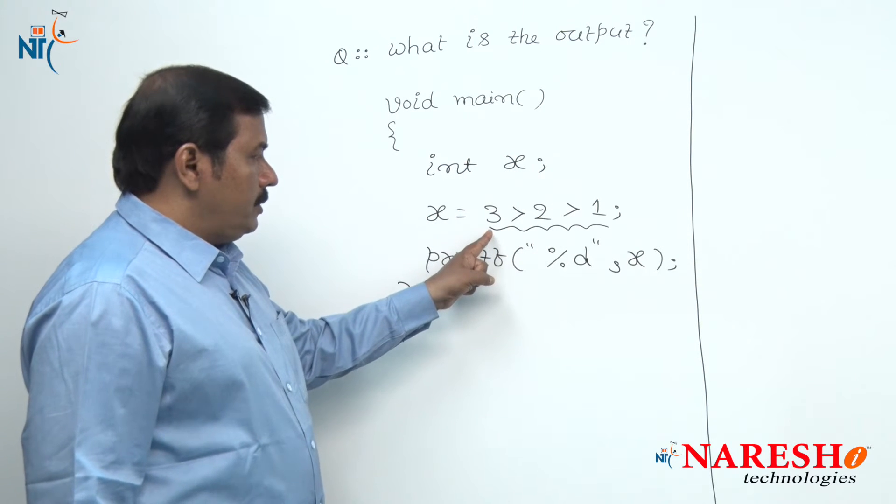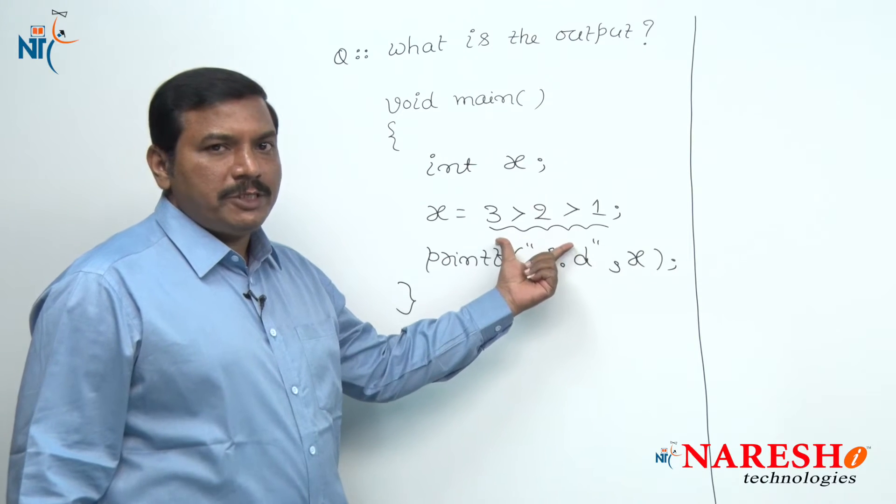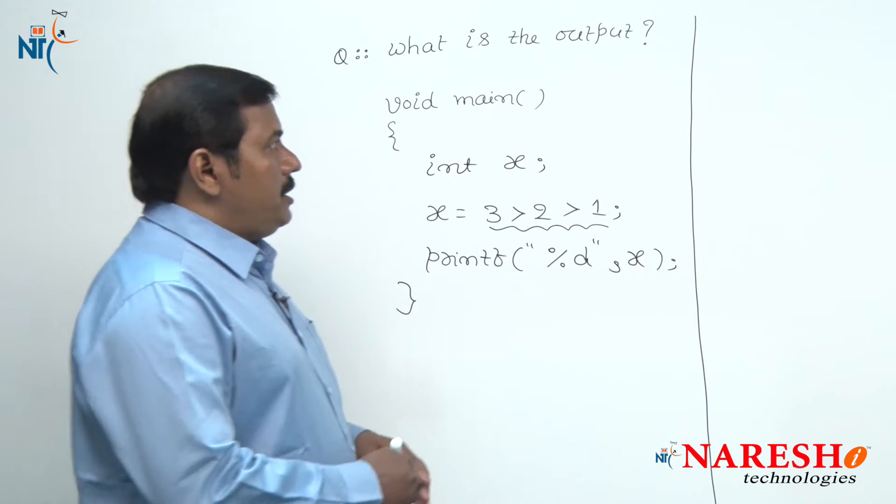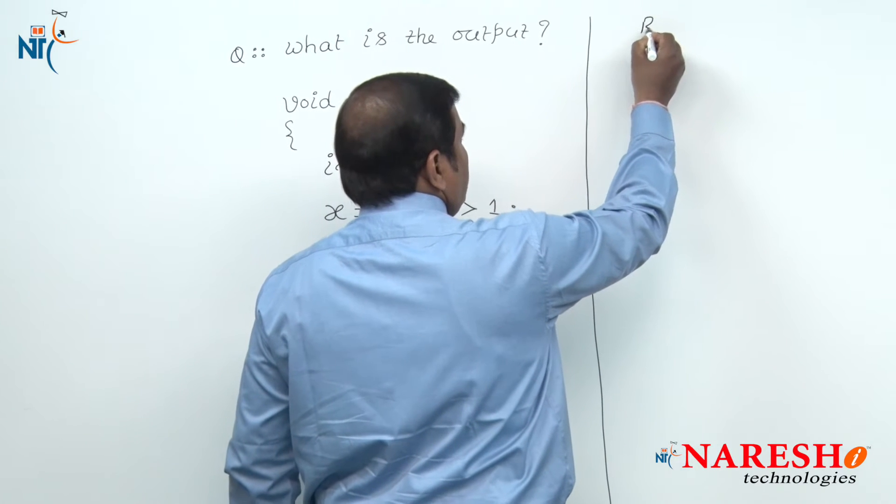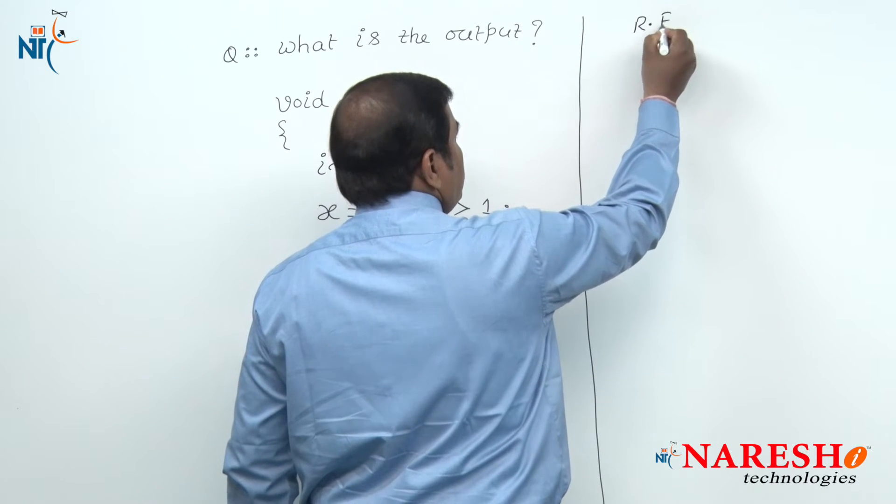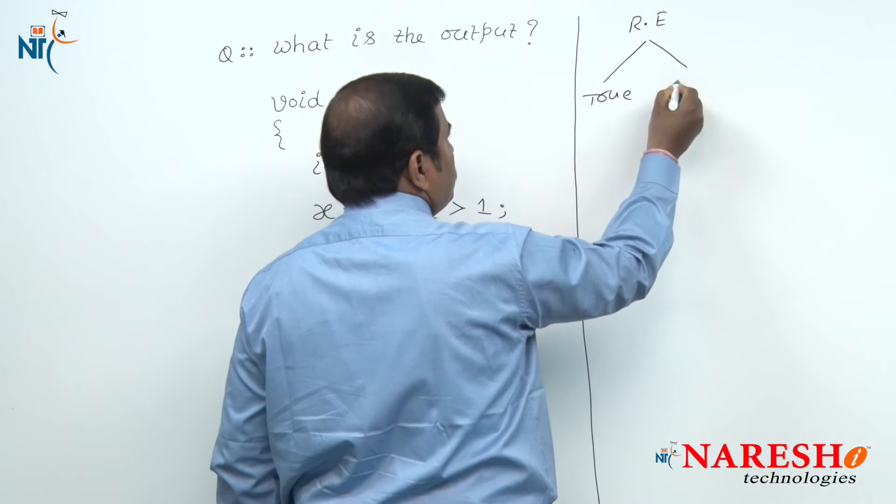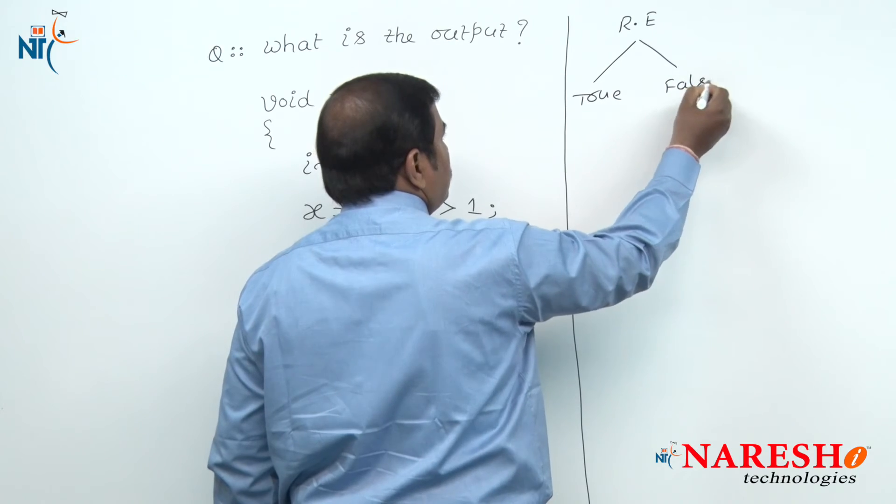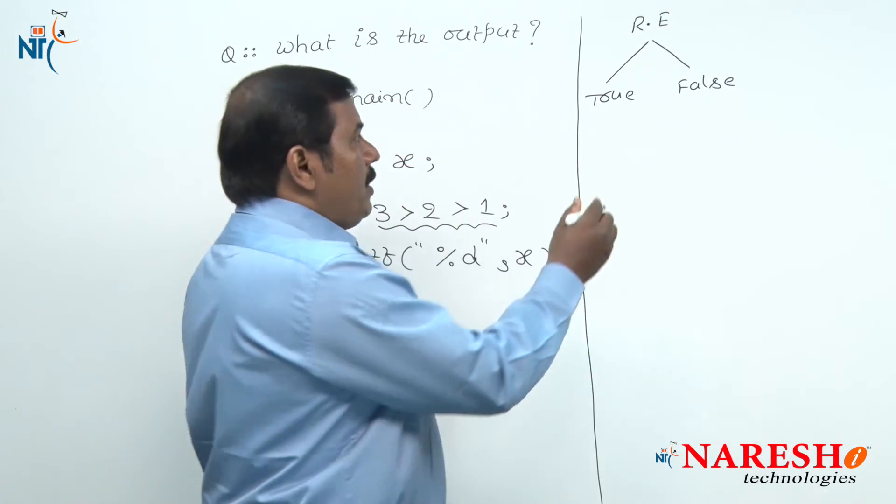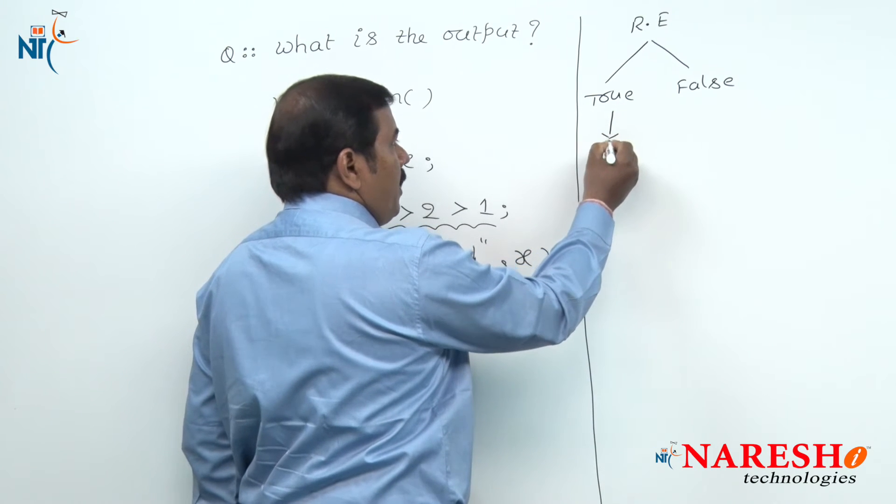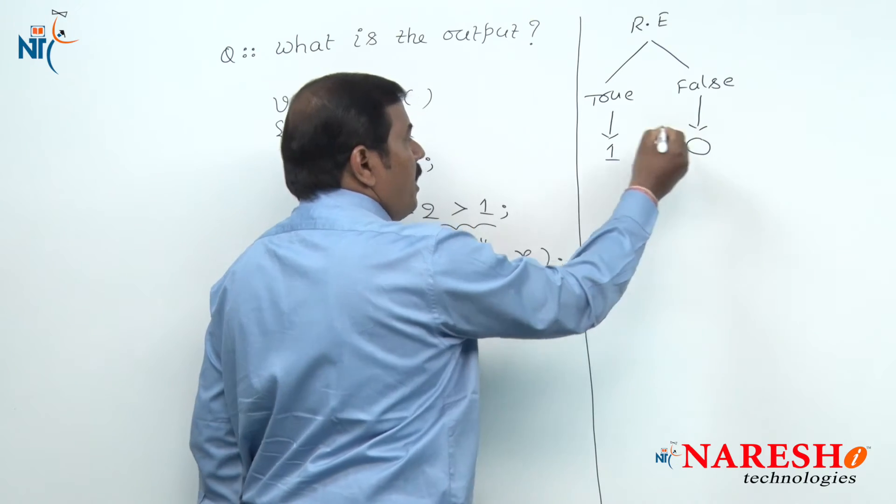In this given code, this expression is known as a relational expression. In C Programming, a relational expression possibly contains two values, that is either true or false. In C language, true value is represented with the value 1 and false value is represented with the value 0.